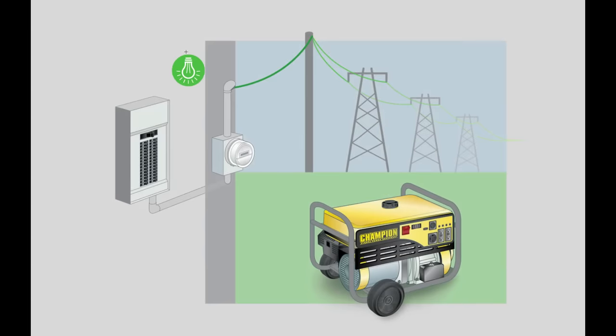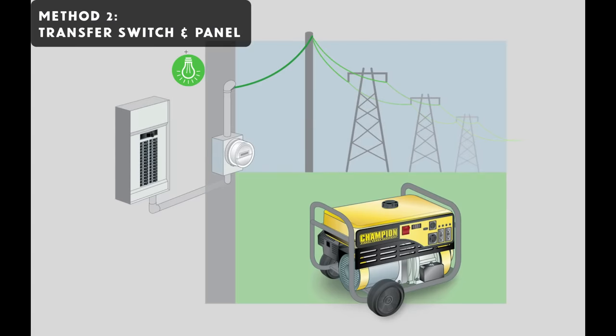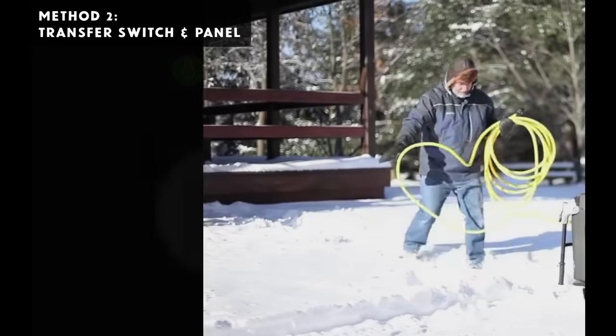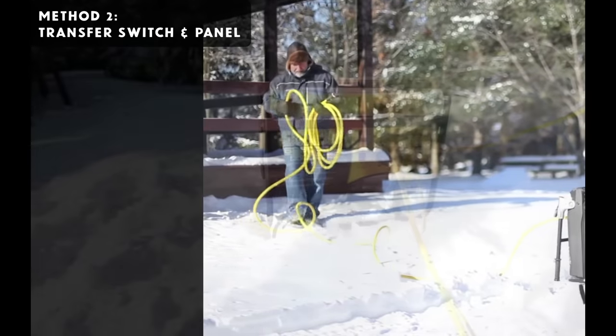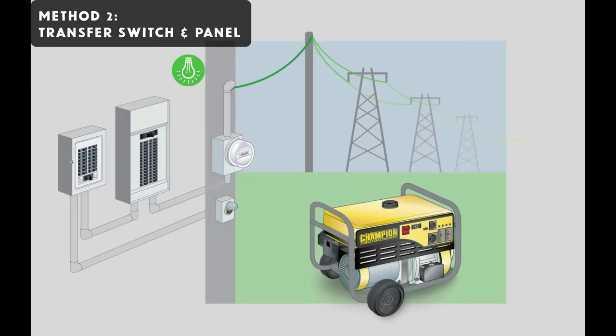The second method of legally connecting a generator to your home uses something called a transfer switch and panel, and it's a lot better than extension cords because it lets you power things that are hardwired in your home, and it lets you make full use of your generator's capacity. To make the transfer switch method work, you're going to need to have some hardware professionally installed, and the first thing is what you see down here, and that is an outdoor connection port.